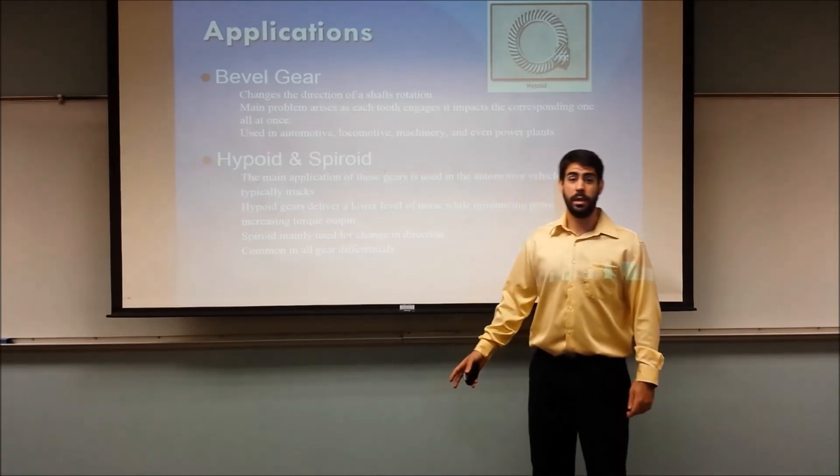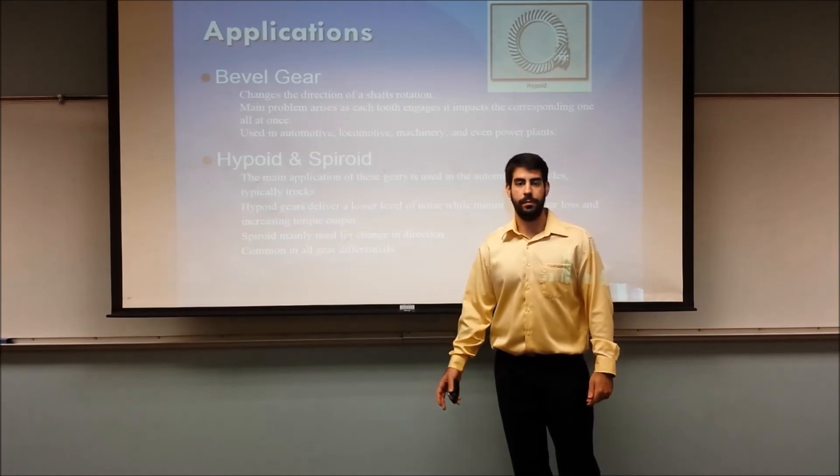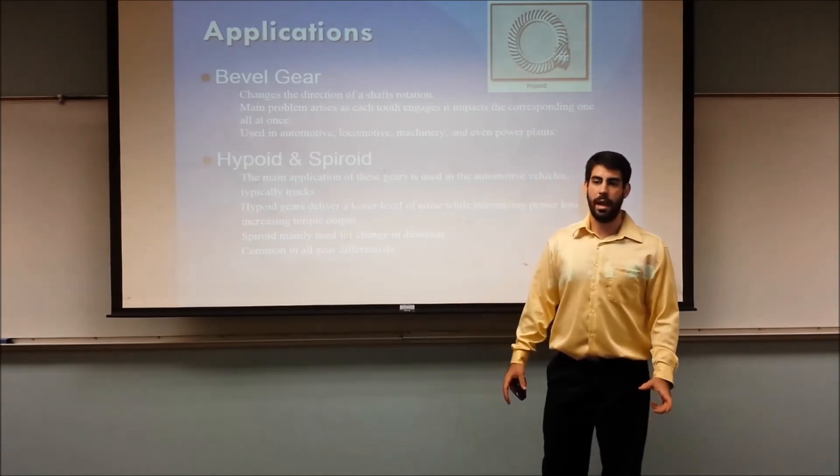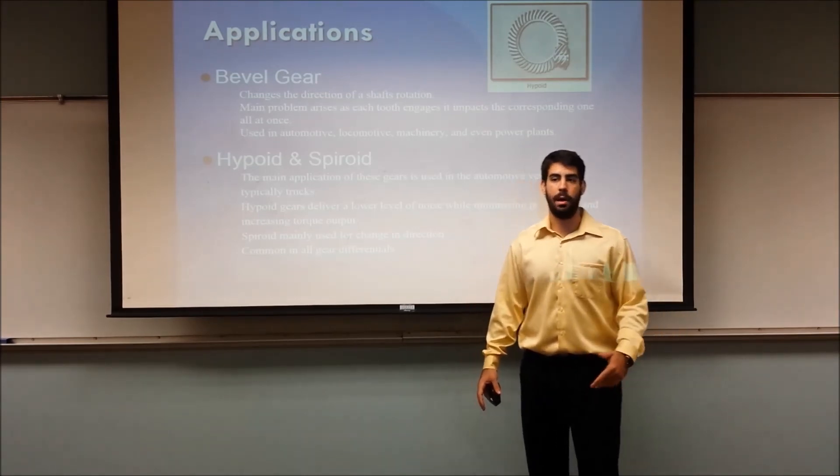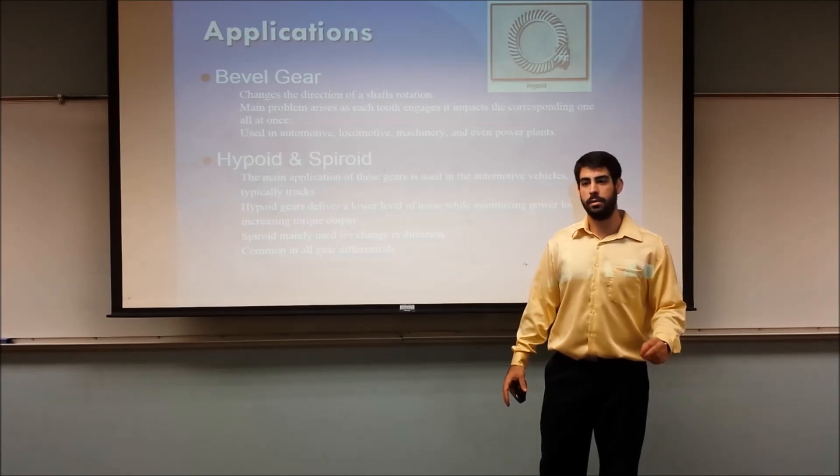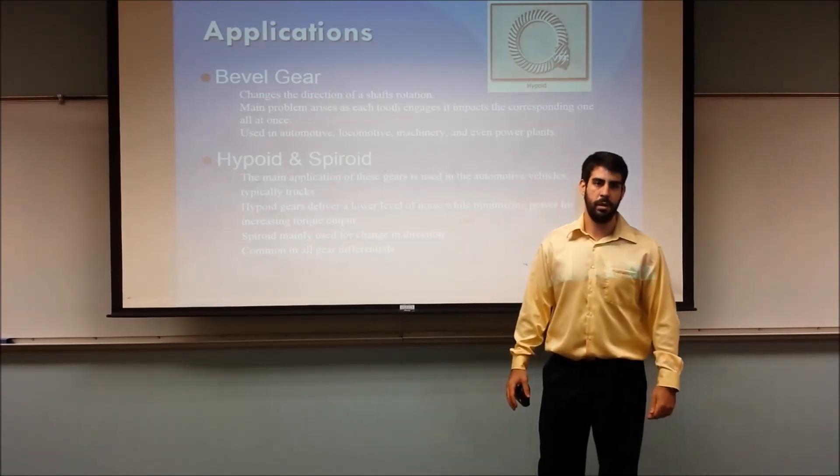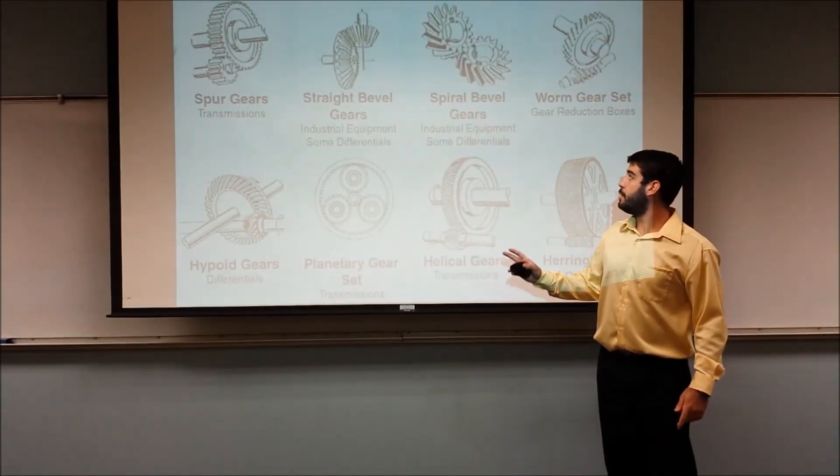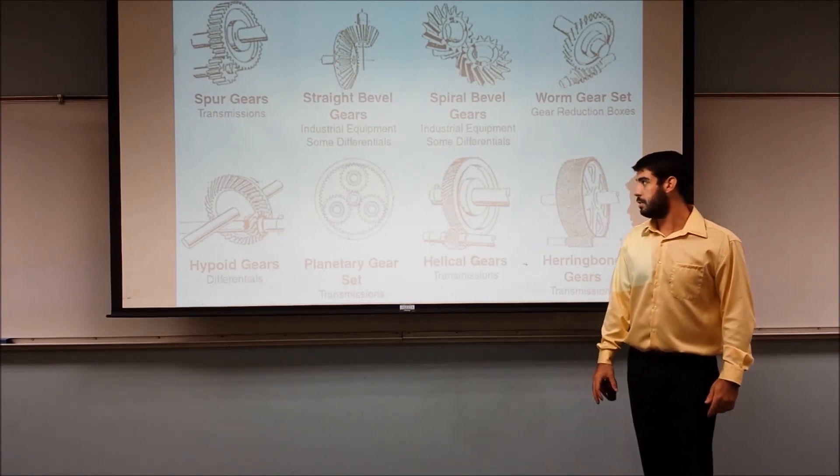The hypoid and spiroid gears are mainly used in the gear differentials of our cars and trucks today. The reason is that the hypoid gear has a larger diameter and various offset angles that allow you to maximize torque while minimizing power loss and are slightly quieter than the traditional gears. On this slide here, you'll see the images of the gears we talked about, including some other ones with their applications listed below.